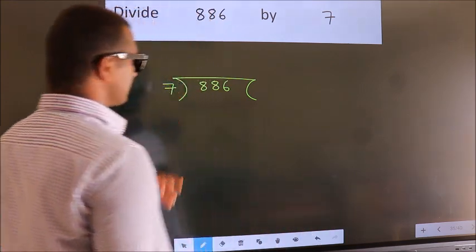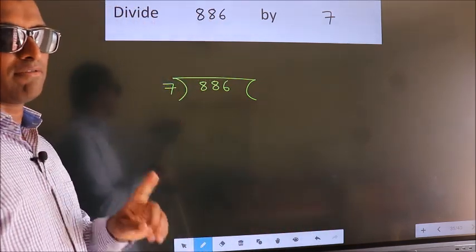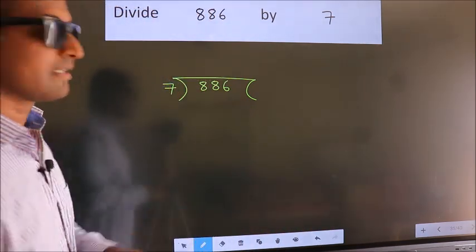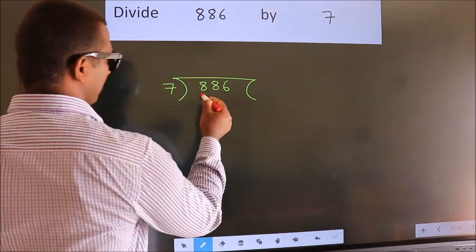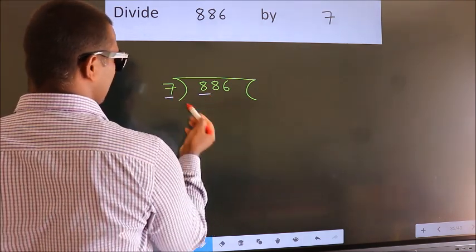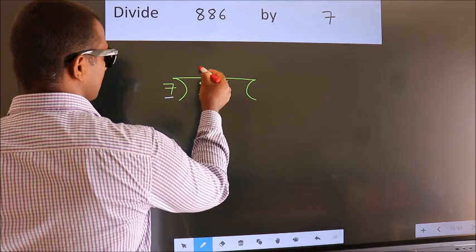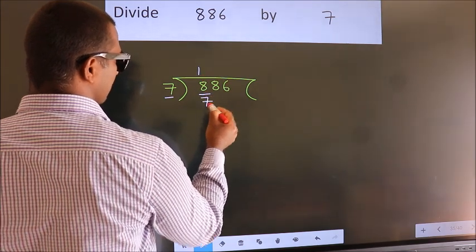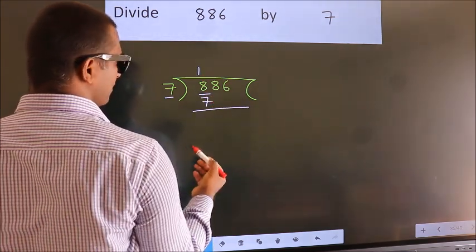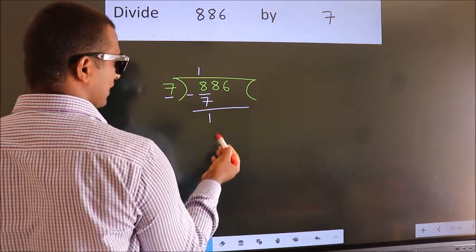This is your step 1. Next. Here we have 8, here 7. A number close to 8 in the 7 table is 7 once 7. Now we should subtract. We get 1.